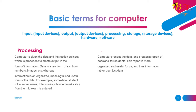Processing: The computer is given data and instructions as input, which is processed to create output in the form of information. Data is a raw form of symbols, numbers, images, etc., whereas information is an organized, meaningful, and useful form of data. For example, student roll numbers, names, total marks, and obtained marks from a mid-exam are entered. The computer processes the data and creates a report of pass and fail students. This report is more organized and useful — and is thus information rather than just data.